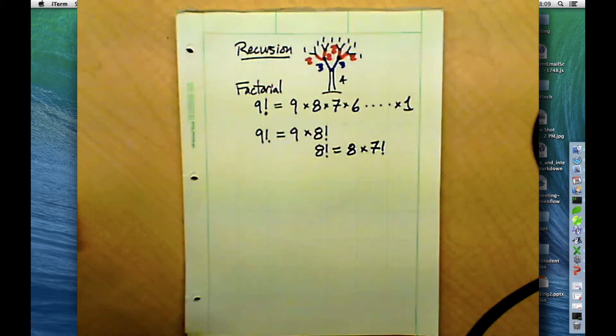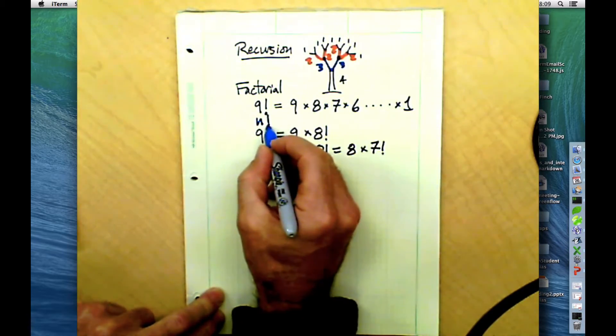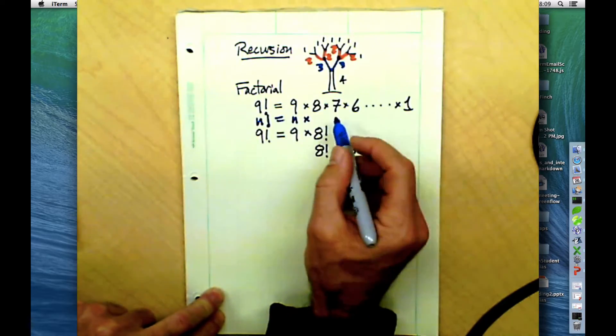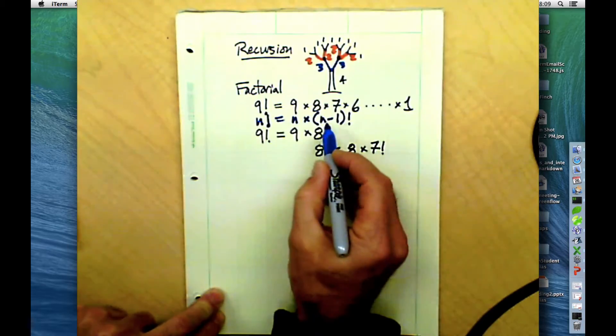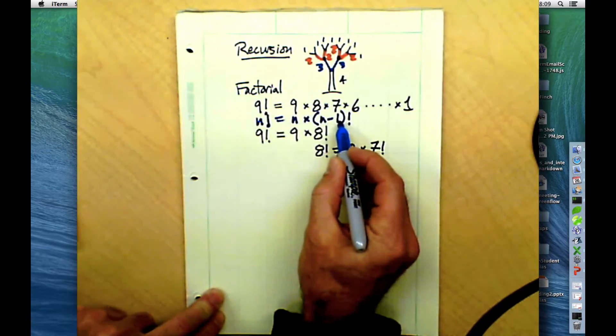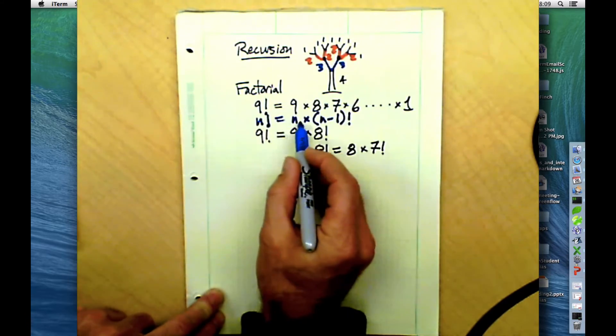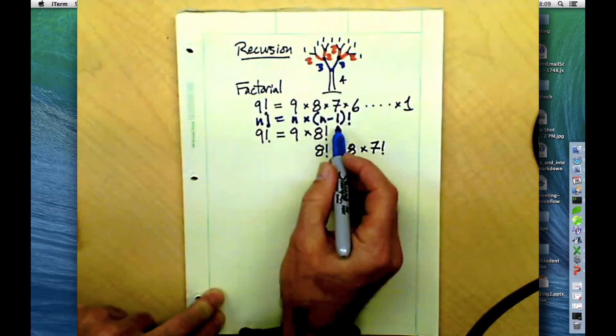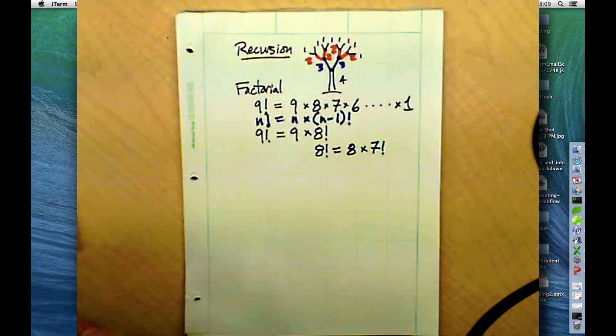We might even want to expand it a little bit and think about it in terms of variables. If we want to calculate n factorial, the factorial for any number, that's just equal to n times the factorial of the number one less than that. And how do you get the factorial of n minus one? Well, that's going to be equal to n minus one times n minus two. So this idea of recursion, of a function calling itself and being used in its own definition, that's what recursion is all about.